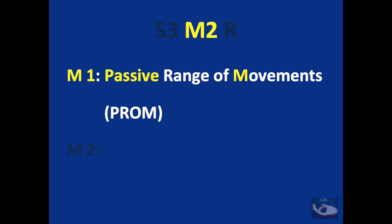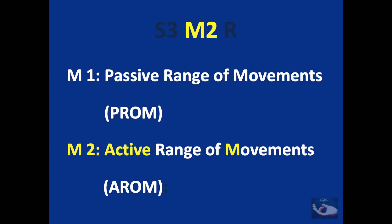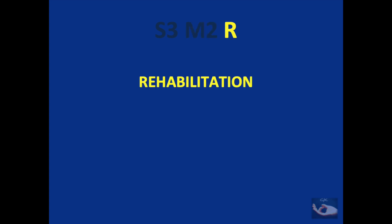Coming to the M2 of the S3 M2R: M1 stands for the passive range of movement, the PROM. The therapist ensures the full passive range of movements of all the joints of the upper limb. M2 refers to the active range of movements, the AROM — that is, the therapist is able to assess which muscles are moving, keeps them active, and ensures that their full capacity is achieved. R stands for rehabilitation in the S3 M2R protocol, given both pre-operatively and post-operatively.